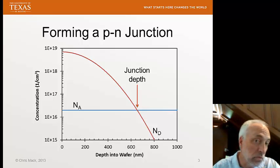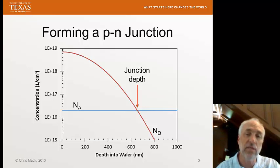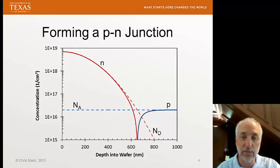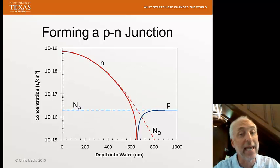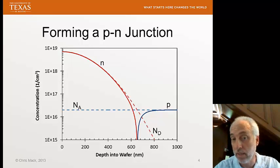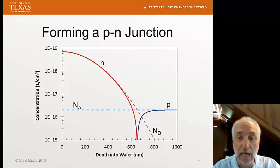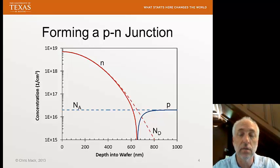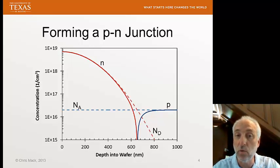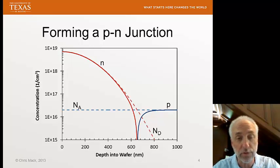We can take these profiles, perform those calculations, and show what the N and p profiles are going to look like. The dotted lines show the dopants at their original concentrations, and here we also show N and p — the mobile charge carriers: electrons N, and holes p.